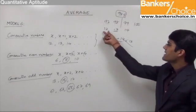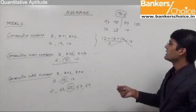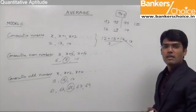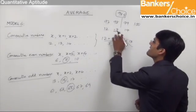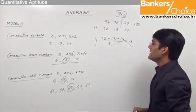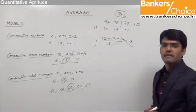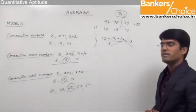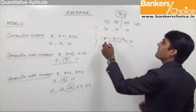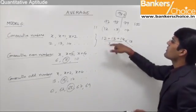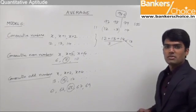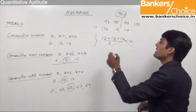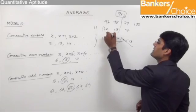Similarly let us take 12, 13 and 14 — for these three numbers the average is 13. But if we include 11, making four numbers, the average cannot be taken directly because we do not have one middle number. So in this case the average should be taken as the number which comes exactly between 12 and 13, which is nothing but 12.5.